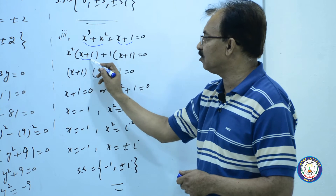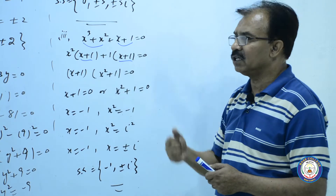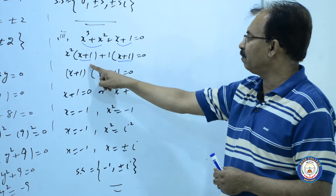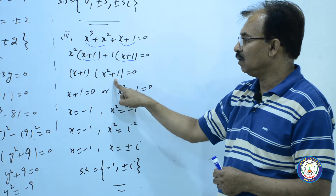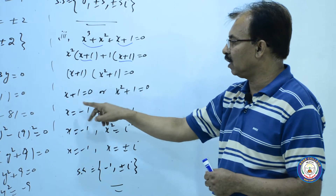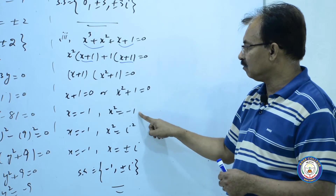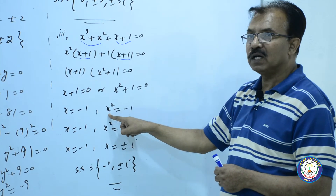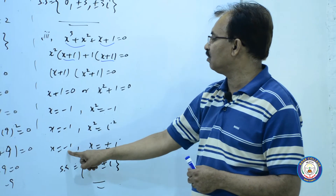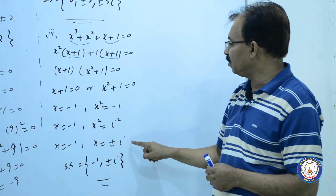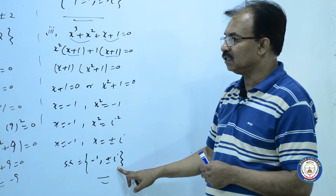pairing کرتے وقت rule یہ ہوتا ہے کہ یہ والا part دونوں کا same آنا چاہیے۔ اگر یہ same نہیں آ رہے تو آپ کی pairing غلط ہے۔ تو x plus one again common آیا، تو x square plus one باقی رہا۔ factorize اس کی ہو گئی۔ دونوں parts کو equal to zero لیا: x is equal to minus one، اور x square is equal to minus one۔ square کا root لینا ہے تو negative کا root solid نہیں ہوگا، negative one کی جگہ iota square، root لیں تو plus minus iota۔ solution set: negative one اور plus minus iota۔